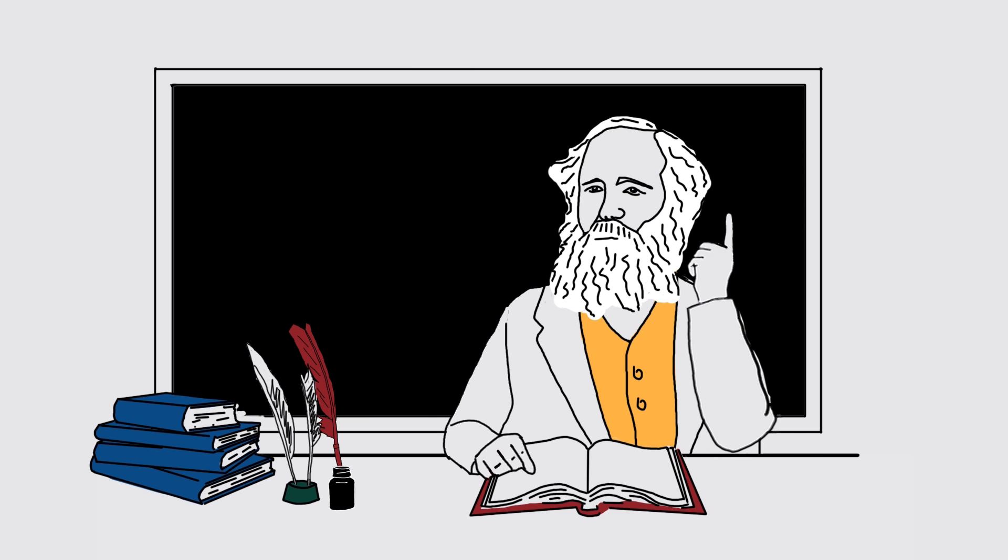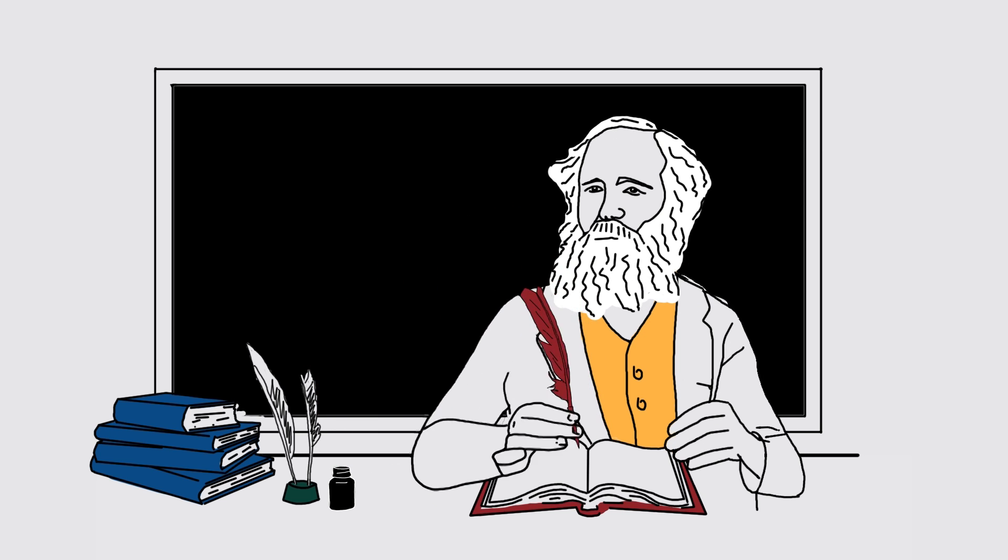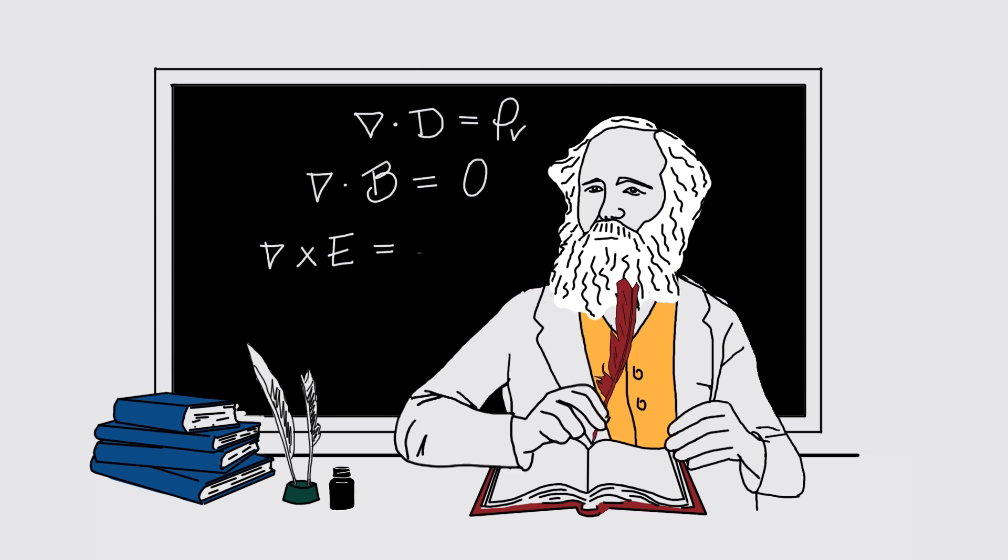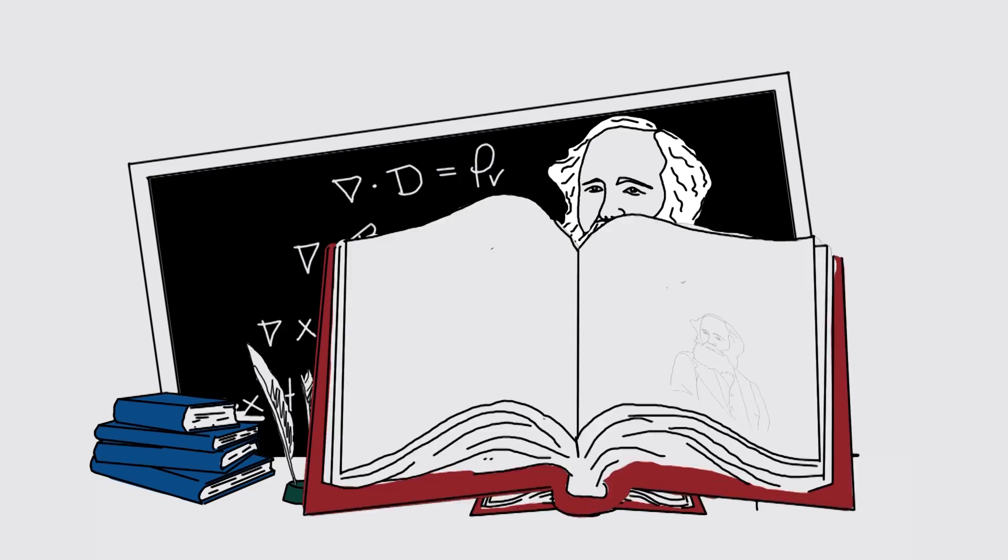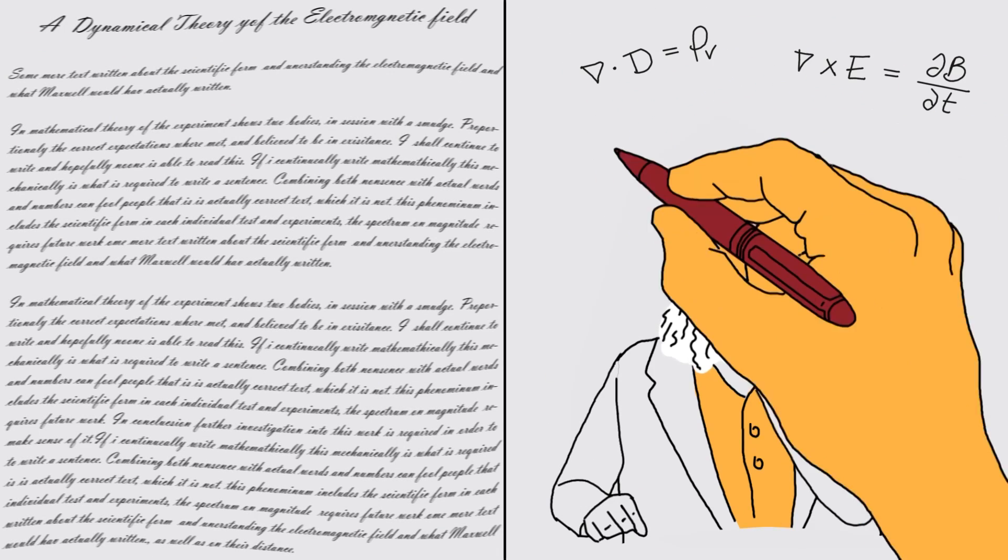From 1855 to 1865, Maxwell published papers showing mathematically how electricity and magnetism work. Although we write them a bit differently these days, they are still called Maxwell's equations.